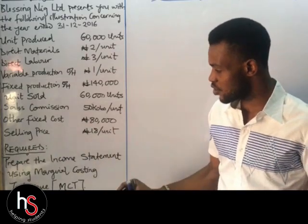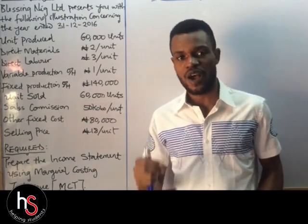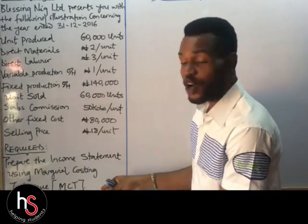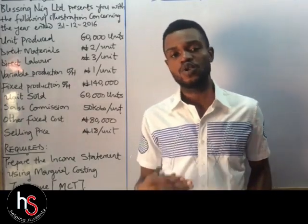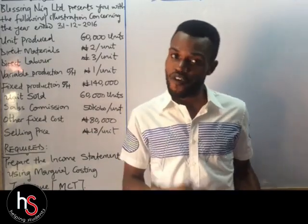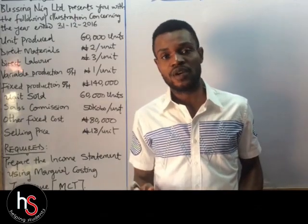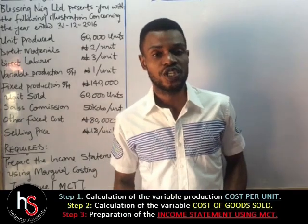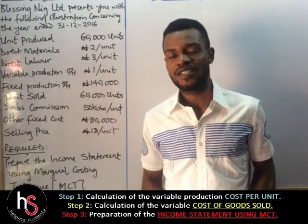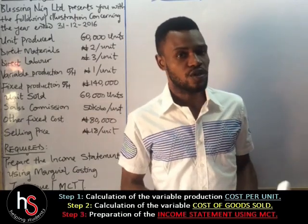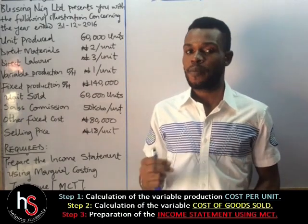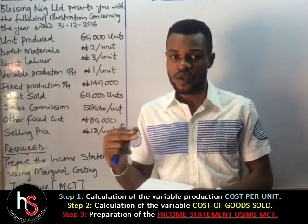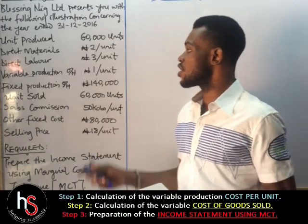This question requires us to prepare the income statement using the Marginal Costing Technique. Before we prepare the income statement, we need to go through certain steps. There are three steps — or four rather — and the fourth step will apply when we have a closing stock. The first step is the calculation of the variable production cost per unit. The second step is the calculation of the variable cost of goods sold. The last step is the preparation of the income statement. But if there is a closing stock, we'll prepare the valuation of the closing stock before the last step.